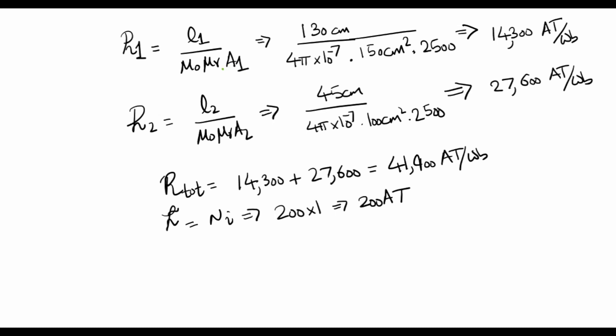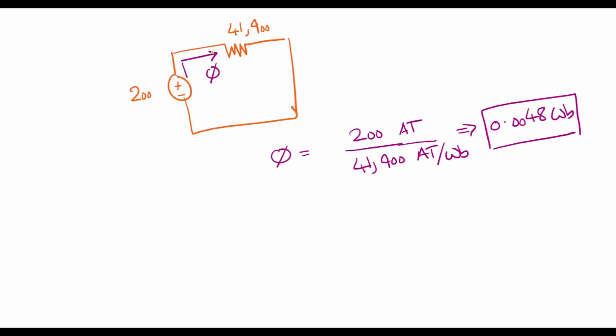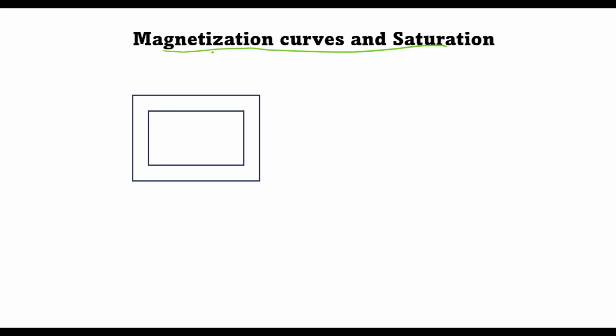In that lecture we assumed that the relative permeability is constant with respect to the applied magnetomotive force, which in general is not true because we have the phenomena of saturation. So in today's lecture we'll see how saturation affects the relative permeability for ferromagnetic materials.